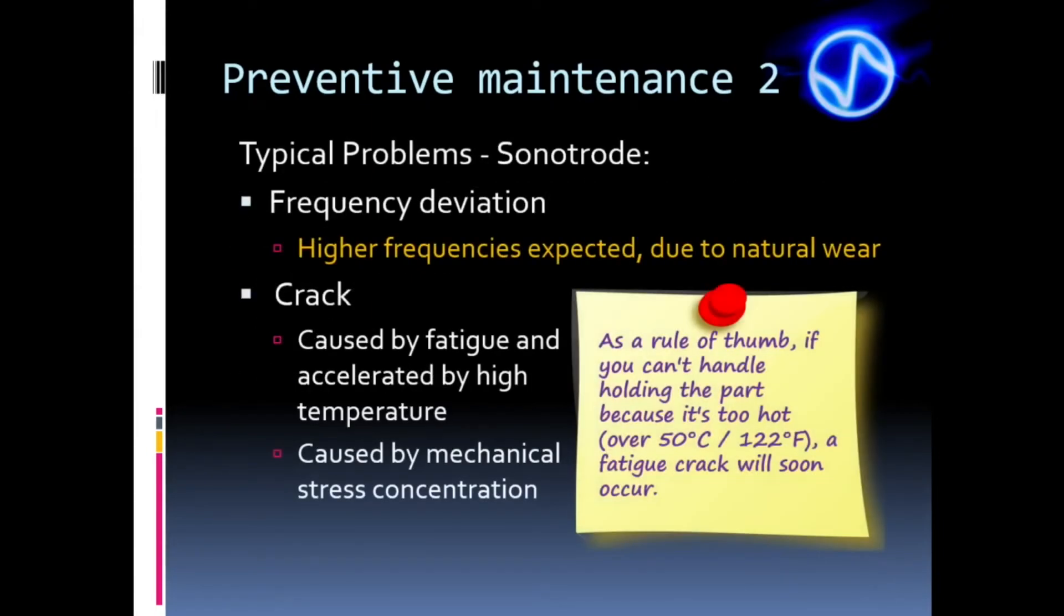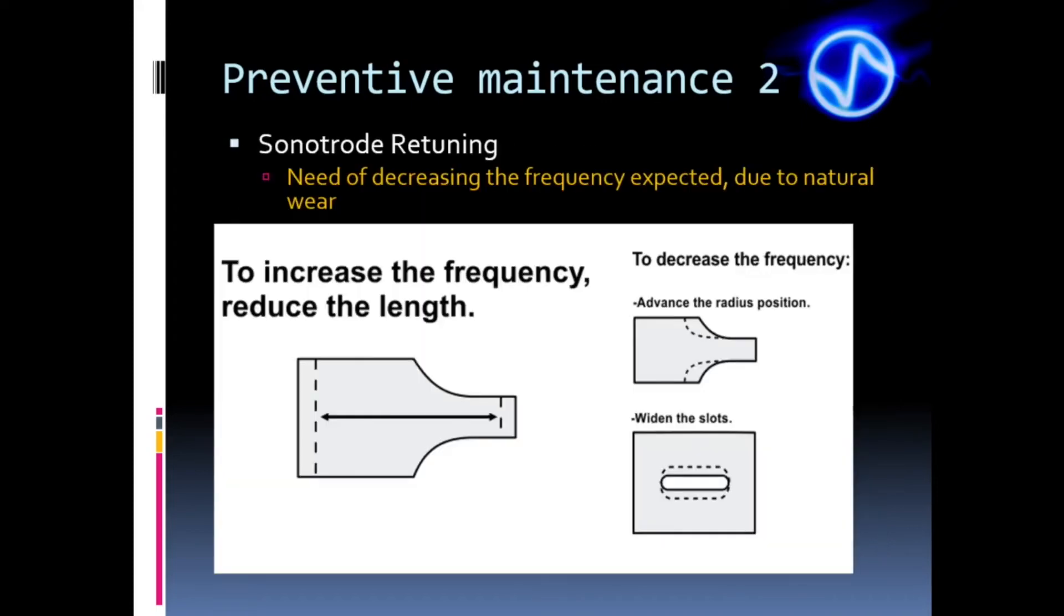One typical defect of the horn or sonotrode is the frequency deviation. It is expected that any sonotrode increases its frequency as it gets worn, because the normal wear shortens the horn, which in turn increases the frequency. Cracks are also a common problem with horns. They are caused by fatigue and accelerated by the high temperature. So monitoring the temperature is advisable. As a rule of thumb, if you can't handle holding the part because it's too hot, a fatigue crack will soon occur.